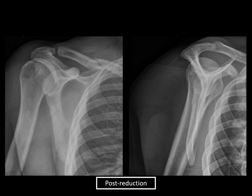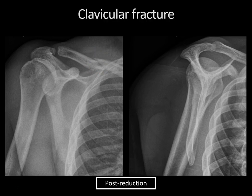On the scapular Y view, the humeral head is now perfectly positioned over the glenoid. There's a comminuted fracture of the right clavicle, much easier to see on post-reduction images. In the setting of a posterior shoulder dislocation, just like with anterior dislocation, certain fractures should be sought — specifically a reverse Hill-Sachs lesion, an impaction fracture of the anterior medial humeral head, and a reverse Bankart lesion, a posteroinferior glenoid fracture as opposed to anteroinferior. These are sometimes better seen on CT scan, and in this case we don't see any radiographically.